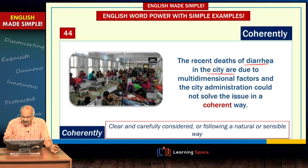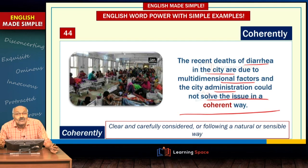So look at this example: the recent deaths due to diarrhea in the city are because of multi-dimensional factors, and the city administration could not solve the issue in a coherent way — meaning they did not look at it carefully with clear-cut reasons by considering various aspects. It was done in a piecemeal way, so the diarrhea deaths may recur.